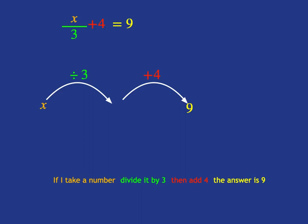So what we need to do is, firstly, we need to subtract the 4, and we'll get 5. And then we need to multiply by 3, and we'll get our solution that x is equal to 15.